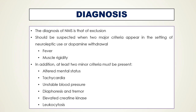The diagnosis of NMS is one of exclusion. It should be suspected when two major criteria appear in the setting of neuroleptic use or dopamine withdrawal. The first major criterion is fever higher than 38 degrees Celsius (100.4°F), and the second is muscle rigidity. In addition, at least two minor criteria are required: altered mental status, tachycardia, unstable blood pressure, diaphoresis, tremor, elevated creatine kinase, and leukocytosis.